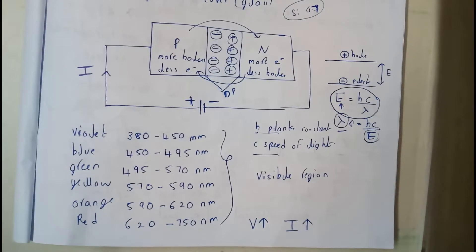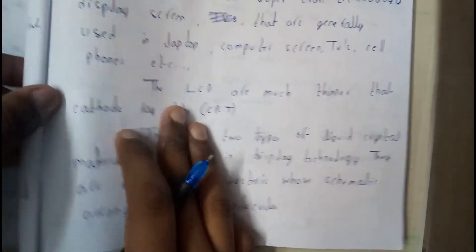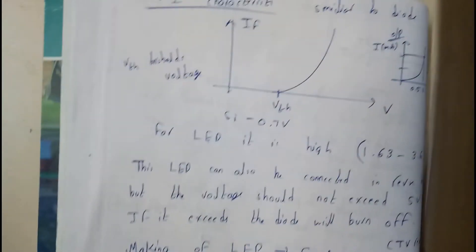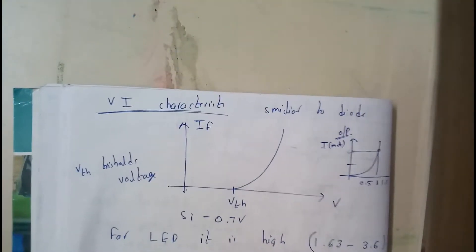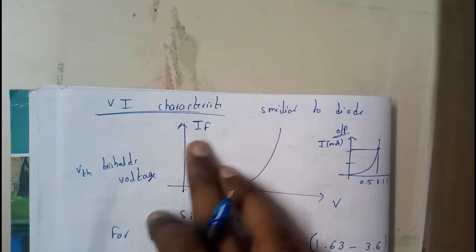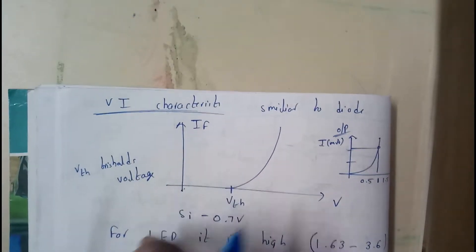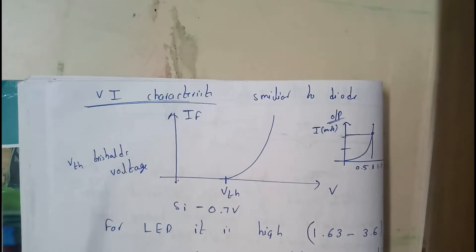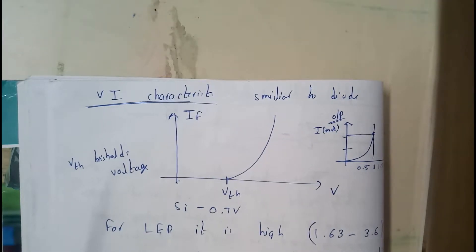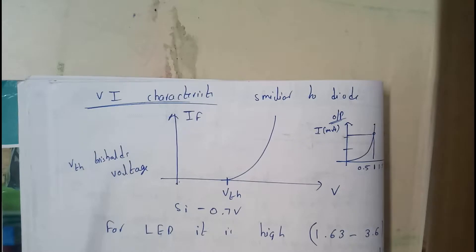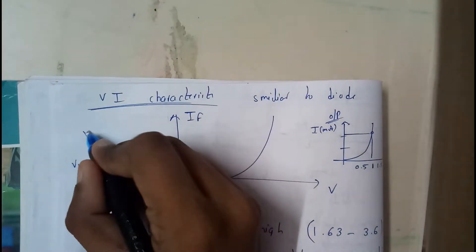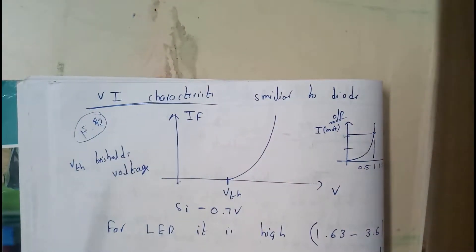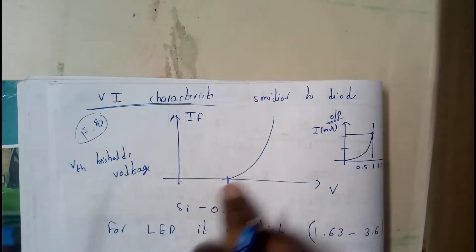We will be going through one more thing - that's nothing but the VI characteristic graph. VI characteristics for this is nothing but similar to our diode. It's just following our PN diode. I hope everyone understood that we are applying forward bias so it's just following our PN diode - so it will be like this.